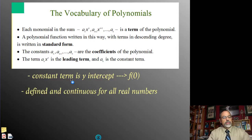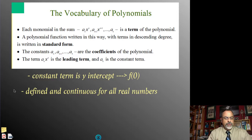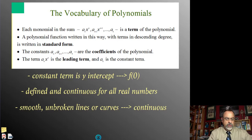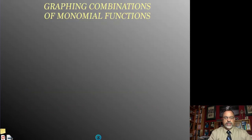All polynomial functions are defined and continuous for all real numbers, meaning there are no breaks. There are no asymptotes, no breaks in the graph for either the domain or the range. They're defined and continuous for all real numbers, which means they're going to be smooth, unbroken curves. All polynomial functions are continuous.